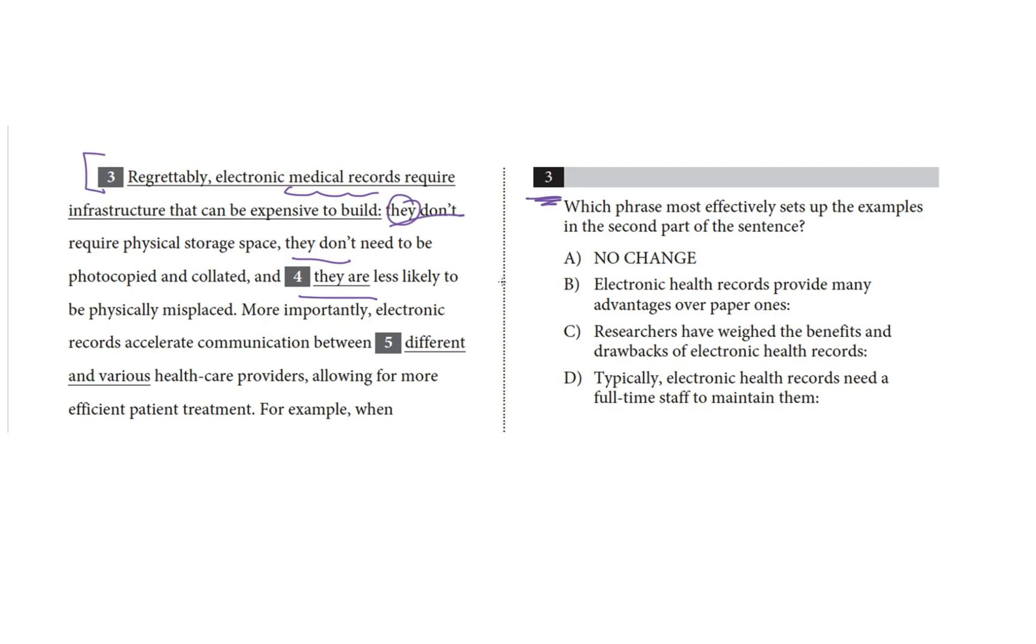So, electronic medical records don't require physical storage space, they don't need to be photocopied, and they're harder to lose than, I assume, paper medical records. These seem like good things, so I'm going to give a little positive by each one. They don't need that, they don't need to be photocopied and collated, and they're harder to lose. So, I'm going to go through the choices and see if they're broadly positive or negative. Anything that isn't positive, I can discard.